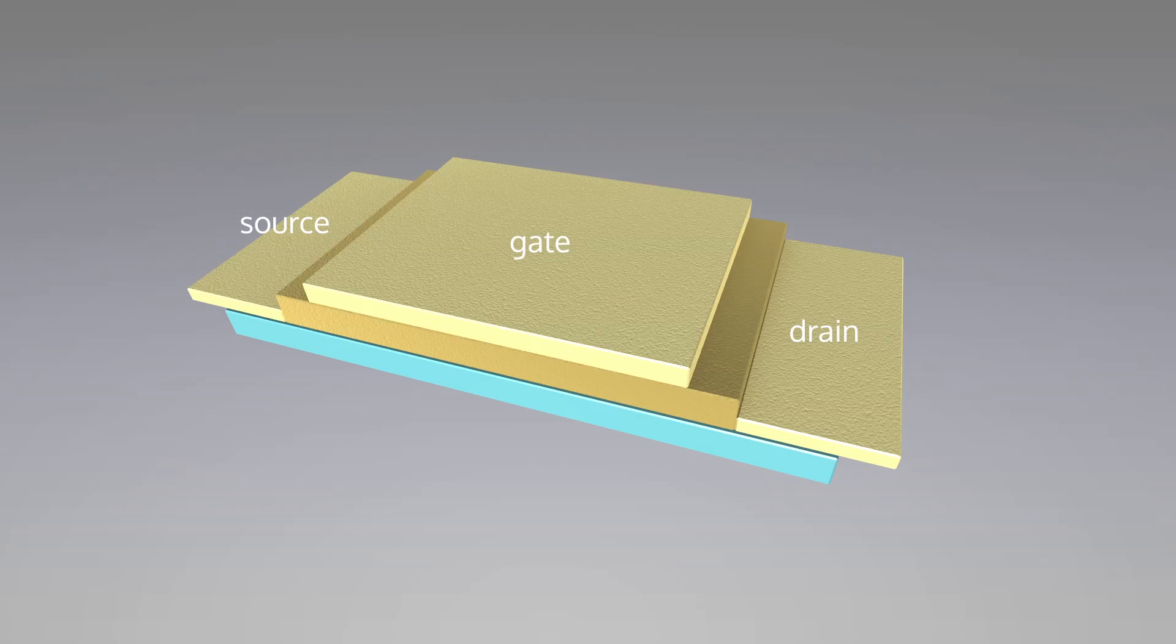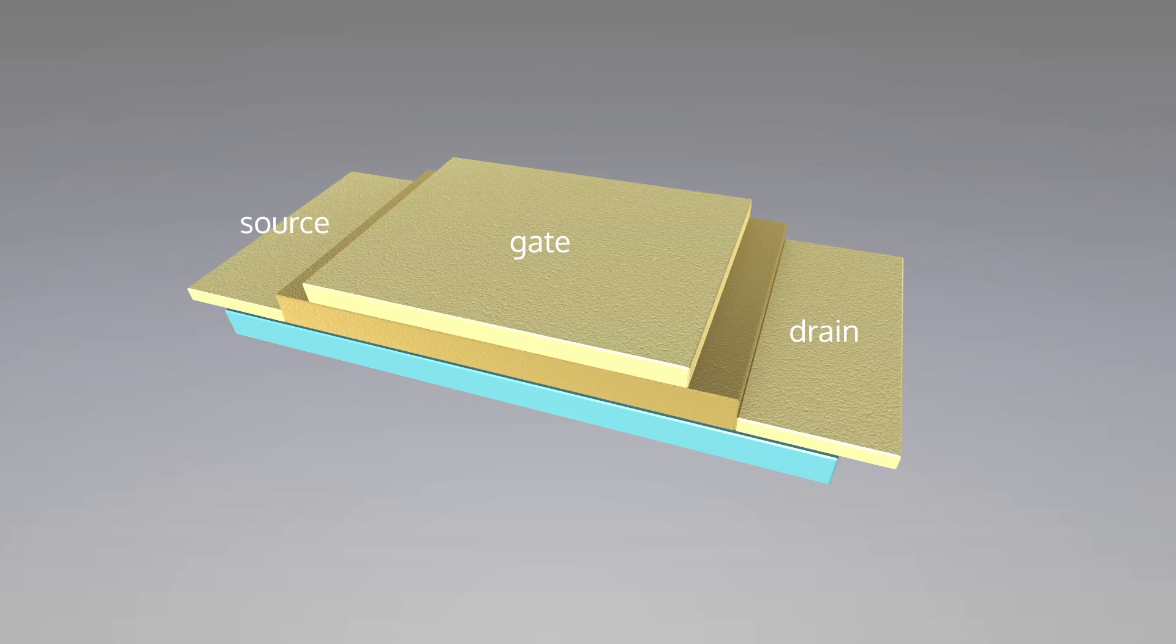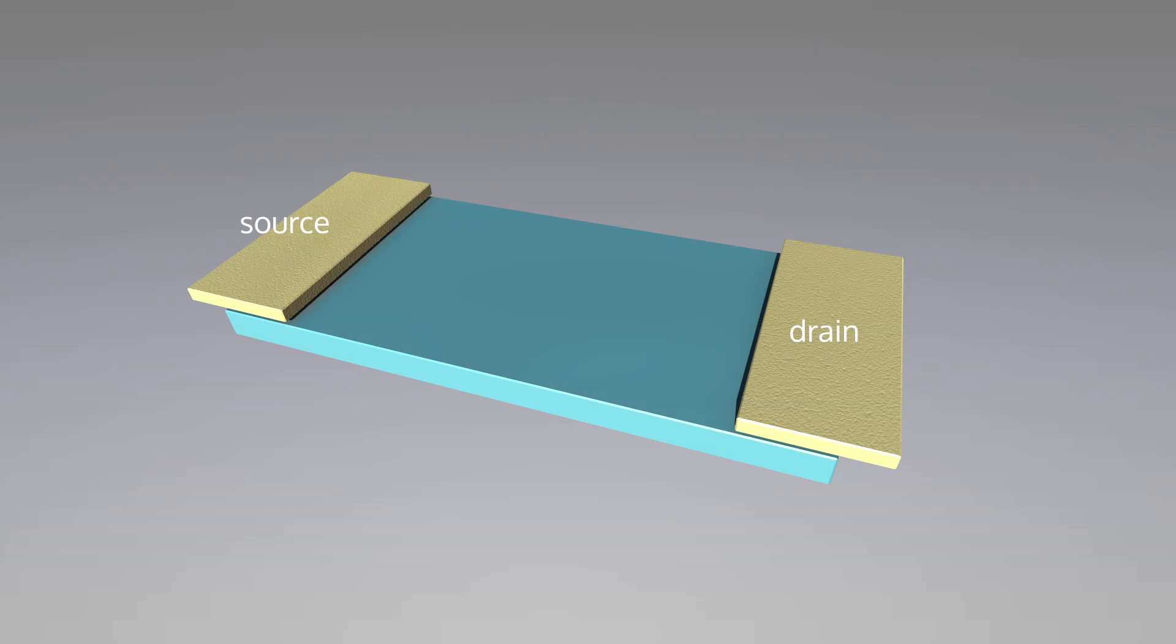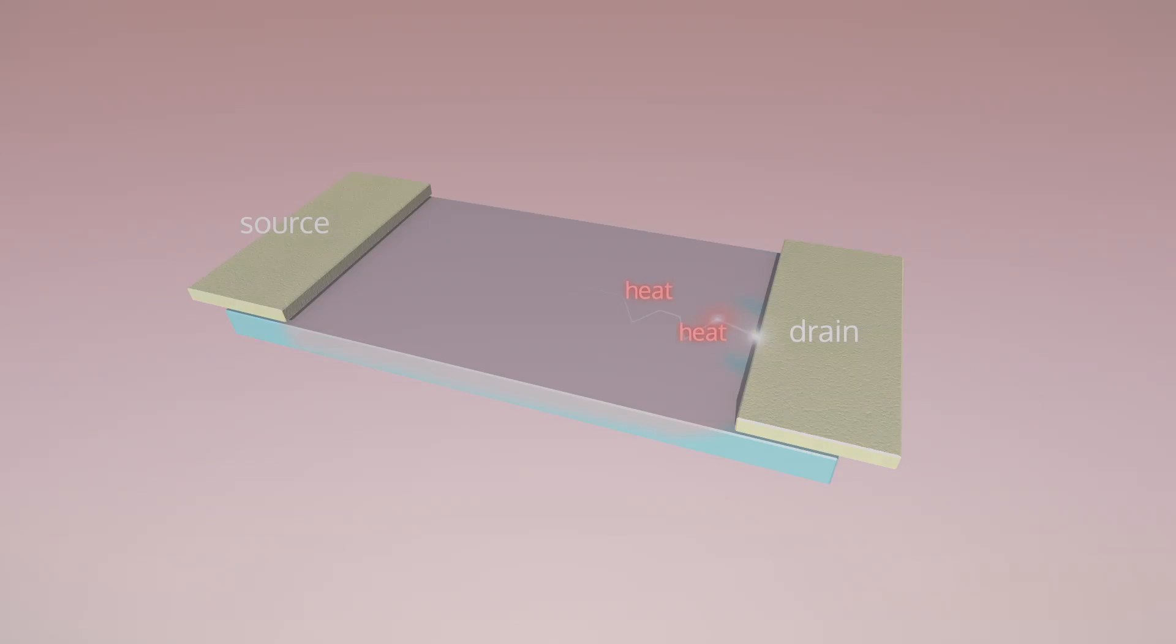A transistor uses a gate electrode to control the flow of electrons between source and drain electrodes. When electrons flow from source to drain, they run into impurities which change their direction causing resistance and energy dissipation.